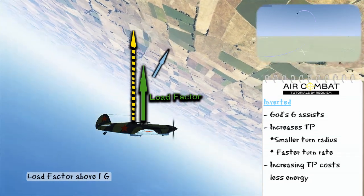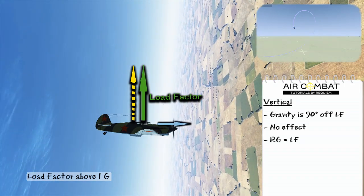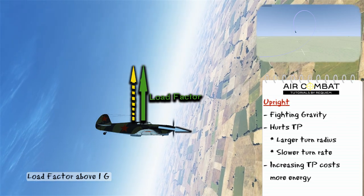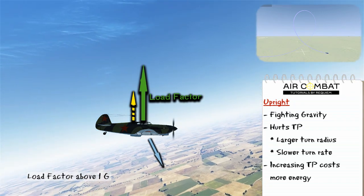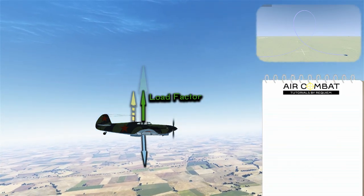Coming down on the back side of the loop, gravity has less of an effect on radial G. Then at 90 degrees, it has no effect, so load factor equals radial G. And now as we complete the loop, we can see our radial G is lower, and our turn performance has decreased, because now we're fighting against gravity.